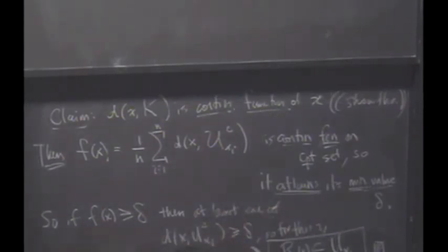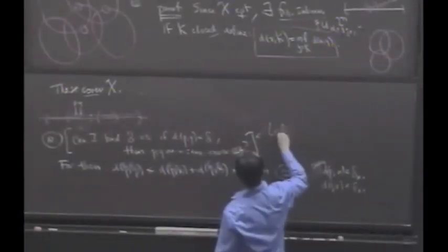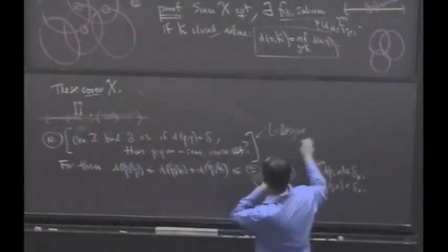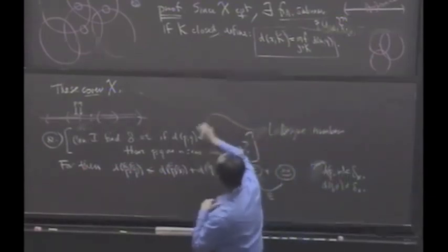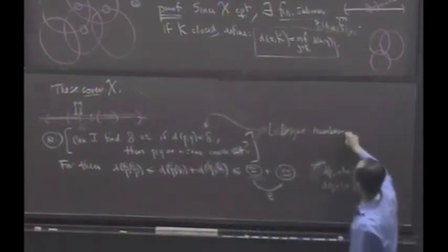What do we have? We have now established, in fact, our claim that continuous function on a compact set achieves, sorry, is that it must be uniformly continuous. So this is true by the Lebesgue number. Well, by the Lebesgue covering lemma, but this delta that we're looking for is the Lebesgue number.